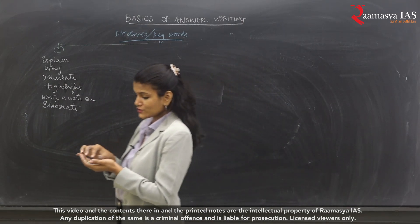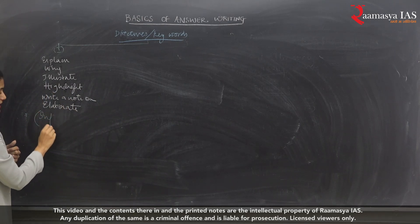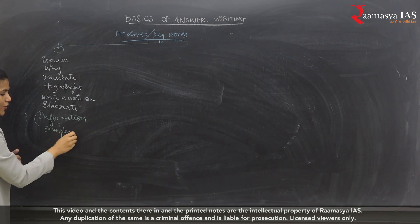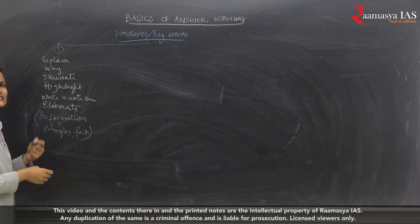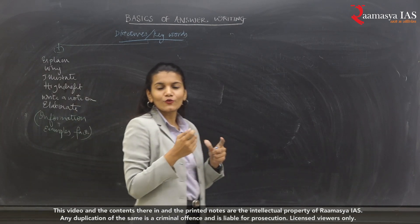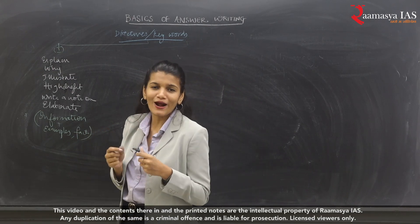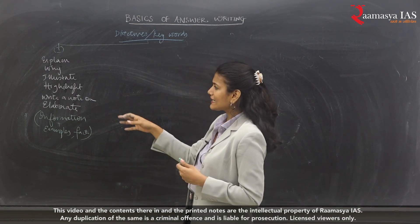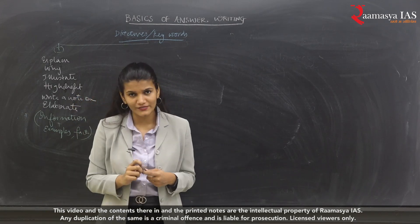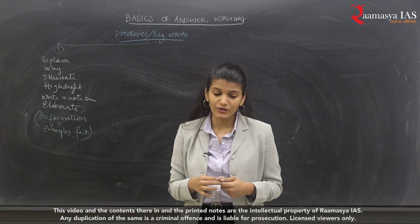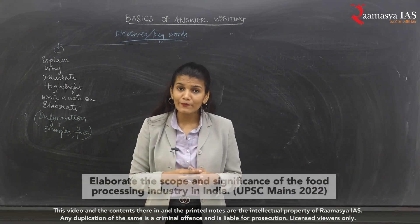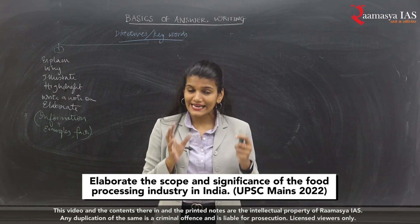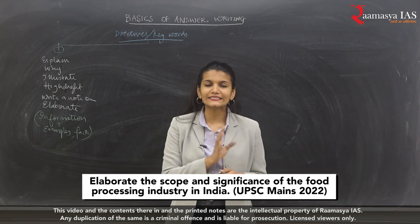For this first category of keywords, you have to give information. And with information, always give examples, certain facts or figures, certain numbers. This will add brownie points so that your answer is self-sufficient. Let's take an example question from 2022, asked in GS Paper 3.